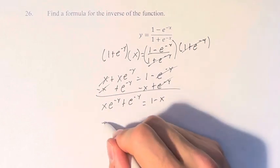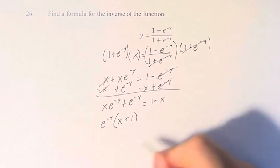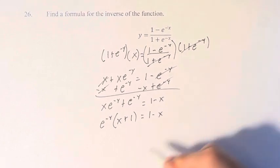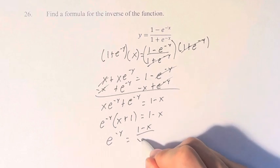If we want to factor out an e to the negative y from this side, we're left with x plus 1. And this is equal to 1 minus x. e to the negative y is therefore 1 minus x over x plus 1.